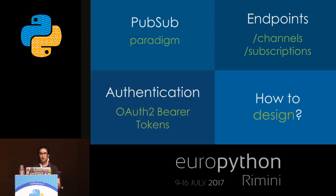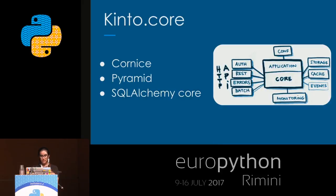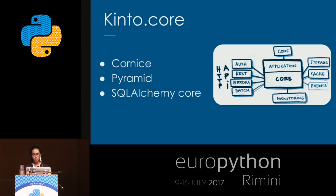We decided we do not want user management — no username or password — so for authentication we chose OAuth 2 bearer tokens. The major question was what language and framework to use. We used kinto.core, which is not a framework but a toolkit you can use to create HTTP REST APIs. It exposes well-defined endpoints and is built using Cornice, Pyramid, and SQLAlchemy core — SQLAlchemy core for database sessions and pooling, and Cornice and Pyramid for all the HTTP and REST functionality.